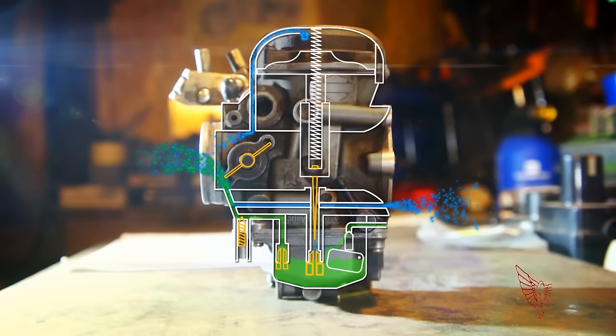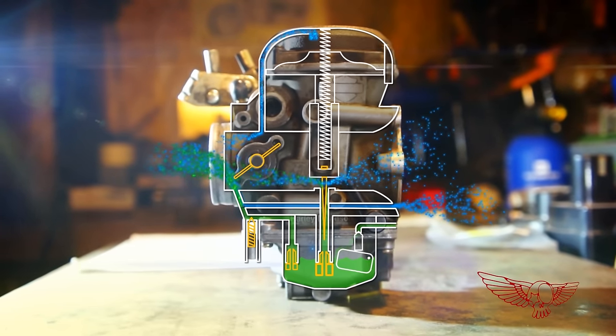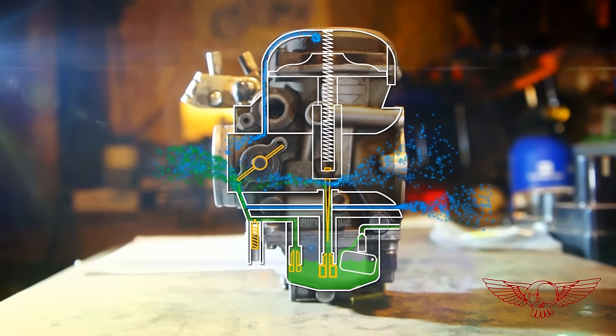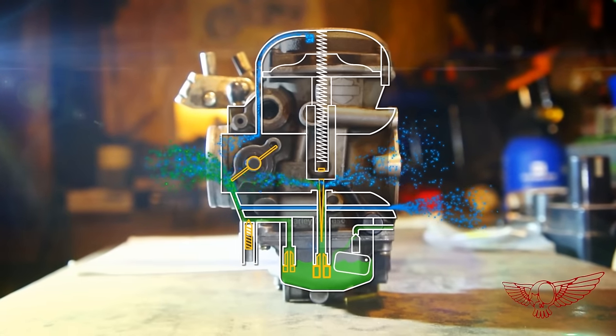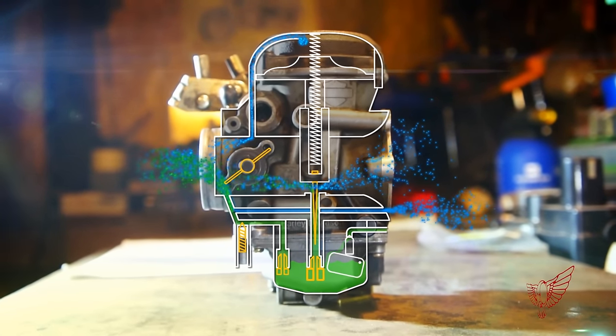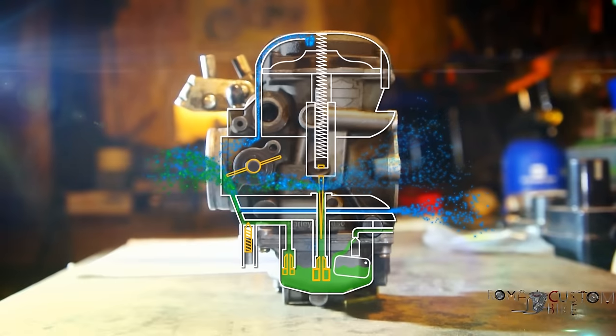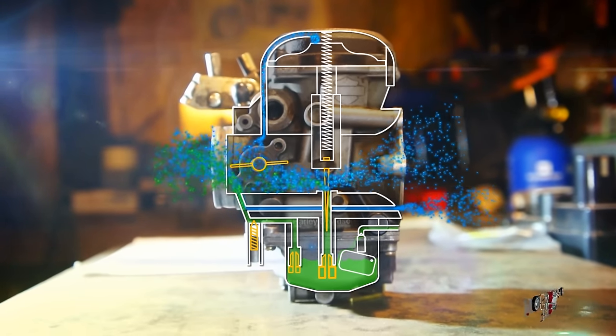As the jet needle is raised, its tapered shape allows for more and more fuel to be suctioned through the main jet. By the same token, as the slide opens, more air is let through the carburetor, proportionally to the quantity of fuel.